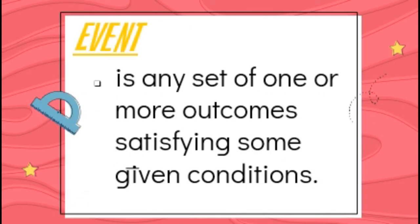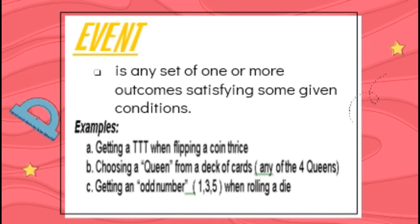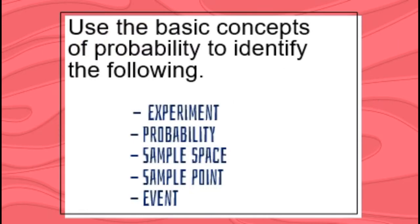Event is any set of one or more outcomes satisfying some given conditions. Examples include: getting three tails when flipping a coin three times; choosing a queen from a deck of cards — any of the four queens; and getting an odd number — 1, 3, or 5 — when rolling a die. Now let's try to use the basic concepts of probability to identify whether a problem illustrates an experiment, probability, sample space, sample point, or event.